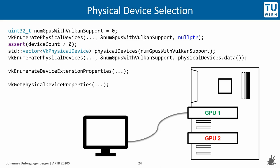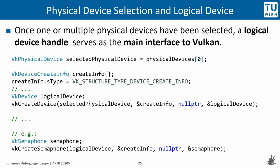You can select one GPU for handling all the work, or select the GPU not connected to the monitor for rendering while using the other just for presenting images — though this may not be optimal since images have to be transferred over PCIe. You can also use all the GPUs in your system and distribute work between them. In Vulkan you do not interface with a physical device directly, but first create a logical device handle — vk-device — which is used as the main interface to Vulkan for a specific physical device, passed as the first parameter to vkCreateSemaphore and similar API functions.